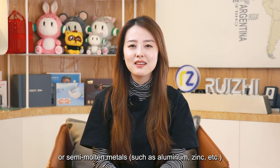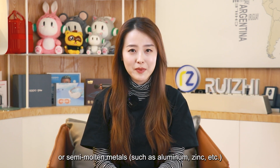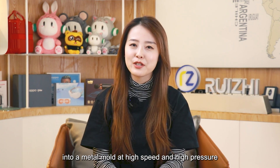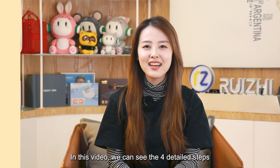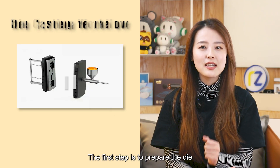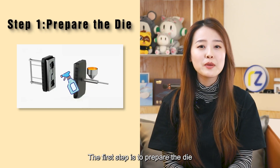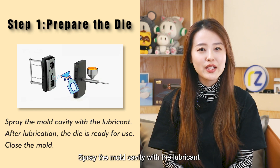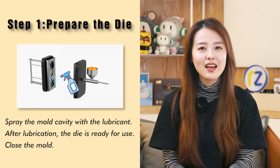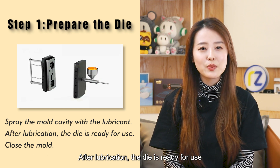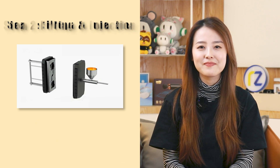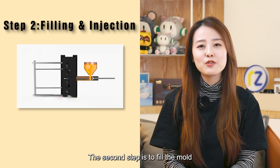Die casting is a technology that injects molten or semi-molten metals, such as aluminum and zinc, into a metal mold at high speed and high pressure. In this video we can see there are four detailed steps. The first step is to prepare the die: spray the mold cavity with lubricants. After lubrication, the die is ready for use, then close the mold.